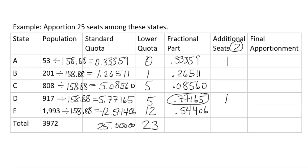So we take the lower quota plus the additional seats: 0 plus 1 is 1, we carry over the 1 and the 5, 5 plus 1 is 6, and we bring over the 12. We've completed step four. This is our final apportionment. We check it by adding the values up — they add up to 25, so we're in good shape.